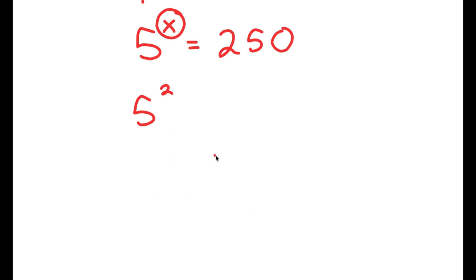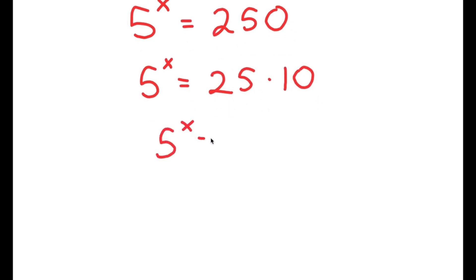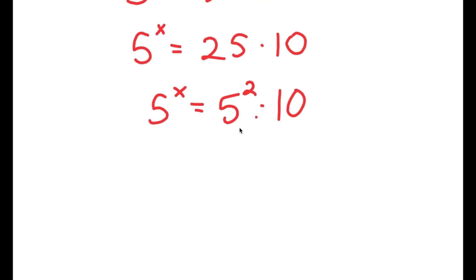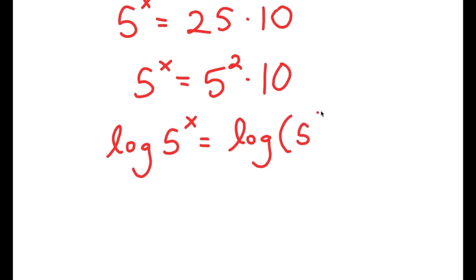So the value of x is somewhere in between 3 and 4. Now, to actually find the exact value of x — not just an estimate — what we're going to do is rewrite 250 as 25 times 10. The reason I did this is because 25 is the same thing as 5 squared, so I get 5 squared times 10. Now I'm going to take the log on both sides, so I get log of 5 to the power of x is equal to log of 5 squared times 10.